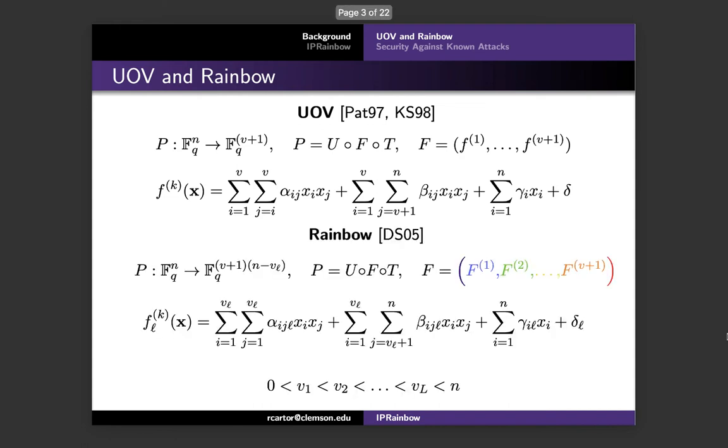Rainbow is an extension of the UOV signature scheme that consists of layers of the UOV central maps. Rainbow was first introduced by Ding and Schmidt in 2005 and was the only multivariate signature scheme to make it to the third round of the NIST standardization project. Recently, Rainbow has encountered substantial attacks, which we will discuss later in this talk.